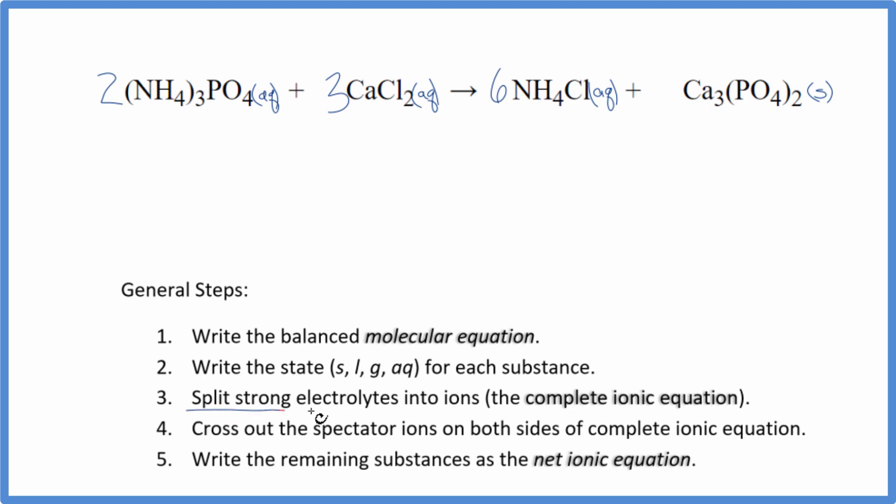At this point, we can split the strong electrolytes into their ions for the complete ionic equation. The ammonium ion, this whole thing here, is one you should remember, is one plus. The whole phosphate ion is three minus. So I have my ammonium ion here, three of them, times two. Six of those ammonium ions. I'll write the states later, two phosphate ions.